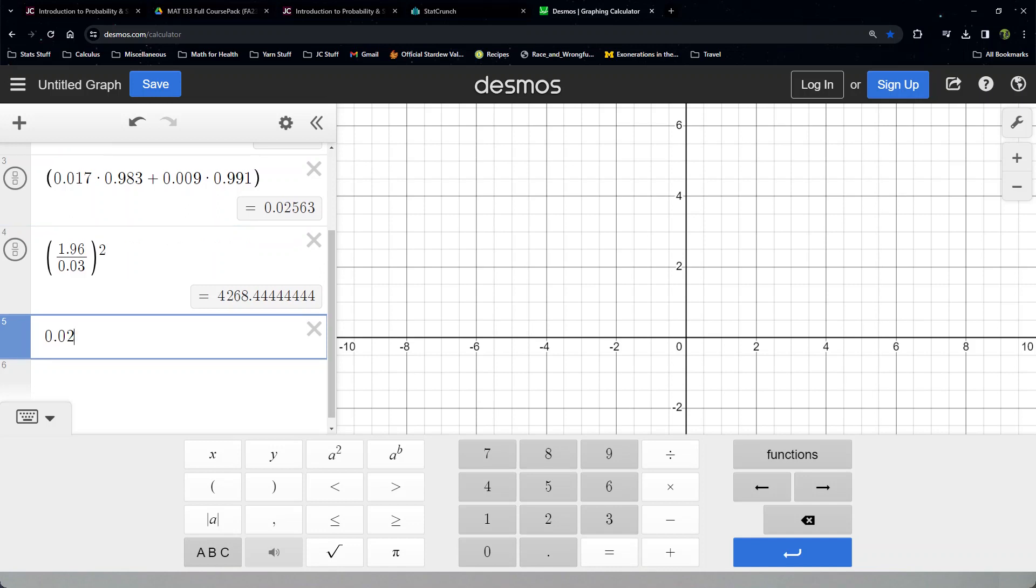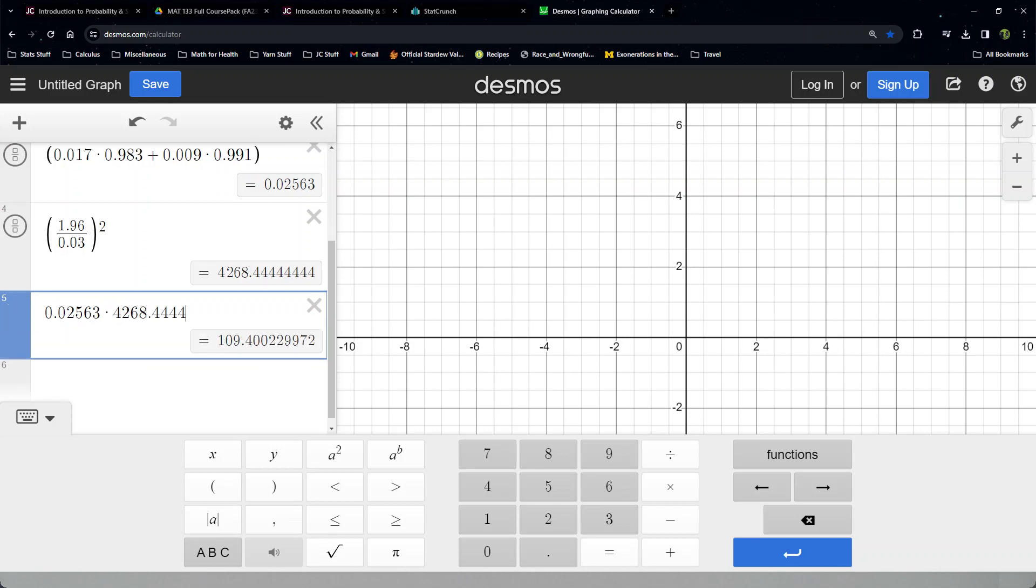And then what you do is you can multiply them. You can say, hey, take 0.02563 and multiply it by 4268.444. And sure enough, we get 109.4 as our result.